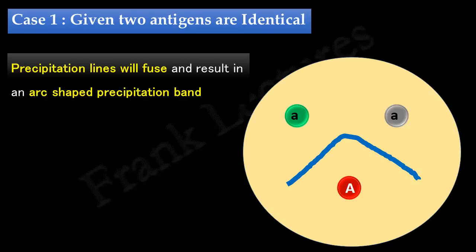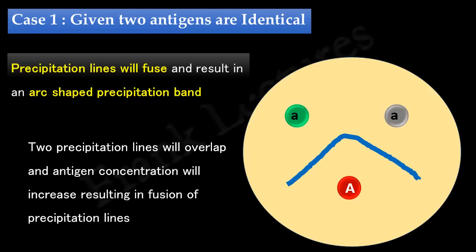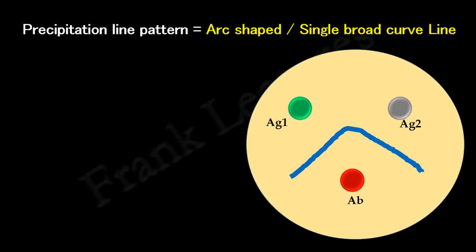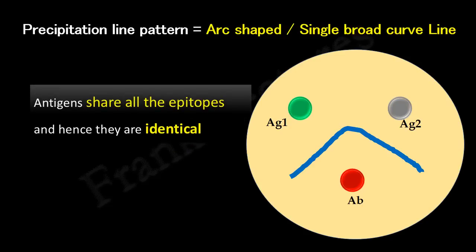The reason they fuse is that the antigens are identical — an antibody cannot distinguish between them. At the zone of equivalence they overlap each other, and antigen concentration increases at the overlapping area. This relative increase in antigen A concentration results in an arc-shaped precipitin band made up of immune complexes formed by antigen A and antibody A. So in a double immunodiffusion assay, if we get an arc-shaped precipitation band, we can interpret that the two antigens are identical — they share all epitopes or antigenic determinants. This pattern is known as the pattern of identity.